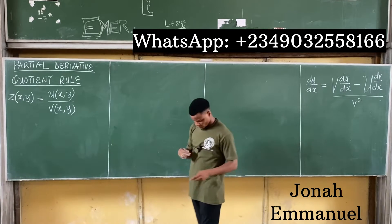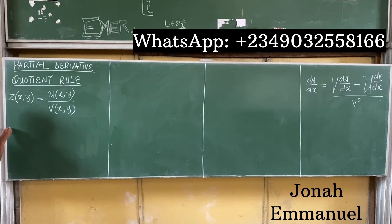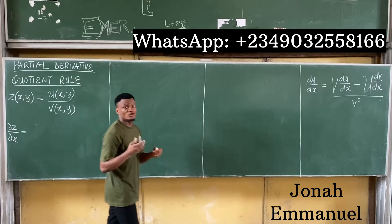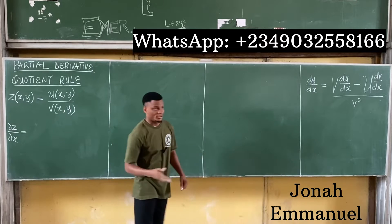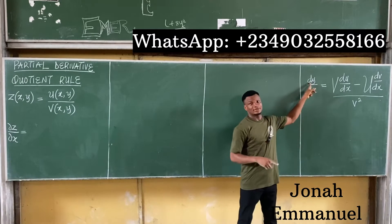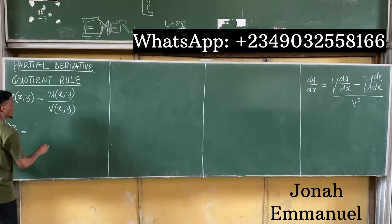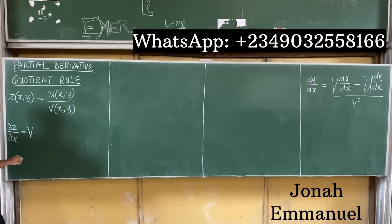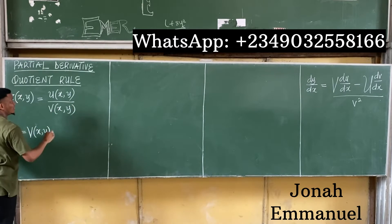For partial derivatives, we have that ∂z/∂x is equal to — notice the curved d I'm writing here; the curved d denotes a partial derivative, while a straight d shows a total differential. So applying the quotient rule format, it becomes v(x,y) times ∂u/∂x...